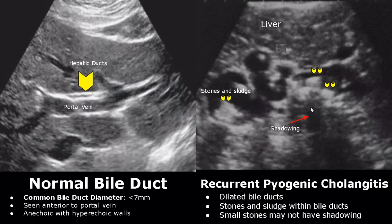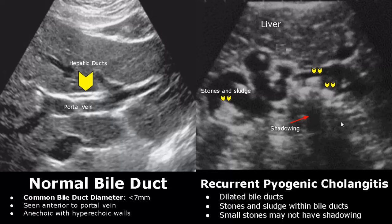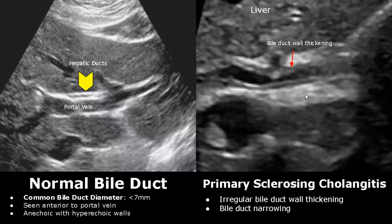Recurrent pyogenic cholangitis is a disease in which there are dilated bile ducts filled with stones and sludge. The stones will often have shadowing, but smaller stones may not. It occurs in the setting of a bacterial biliary tract infection. In primary sclerosing cholangitis, there is irregular bile duct wall thickening and narrowing of the bile duct lumen — at certain points there is more wall thickening compared to adjacent areas, making it irregular.